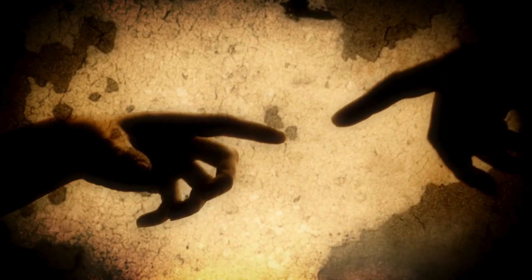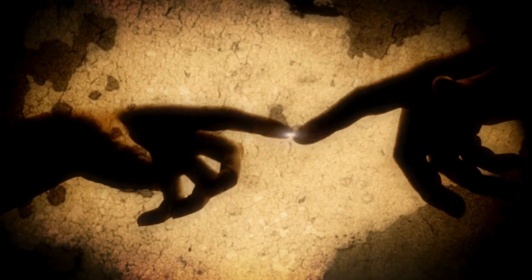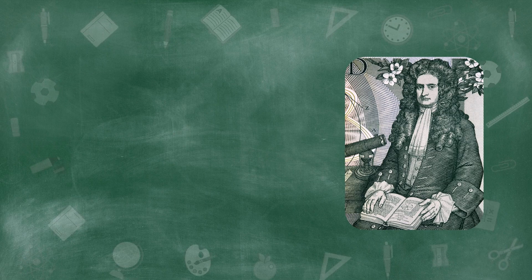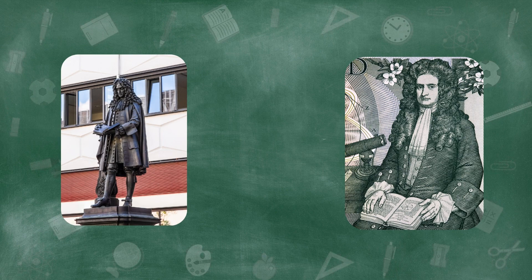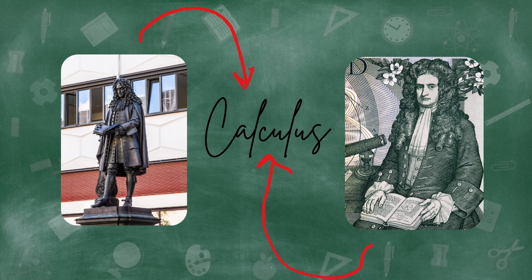Then there came Renaissance. In the Renaissance, two famous mathematicians rose above, Sir Isaac Newton and Leibniz. And they both claimed that they have invented calculus. It brought a revolution, finally, a systematic way to deal with change, motion and infinitesimals.